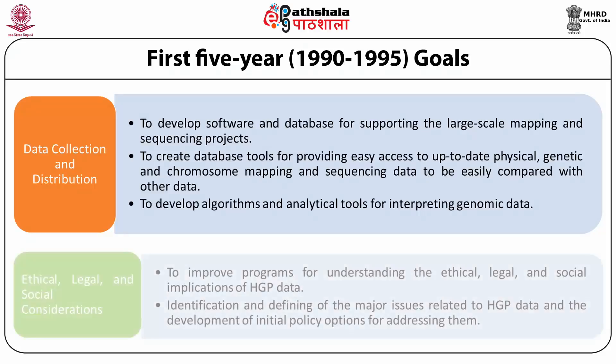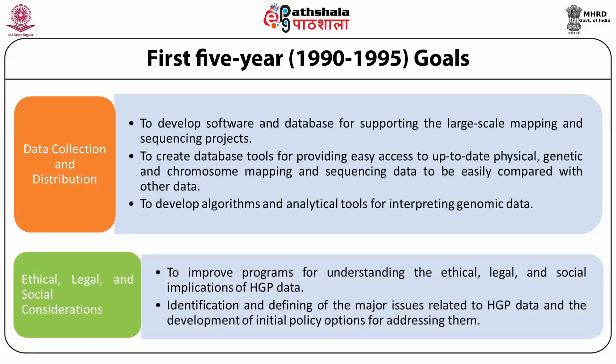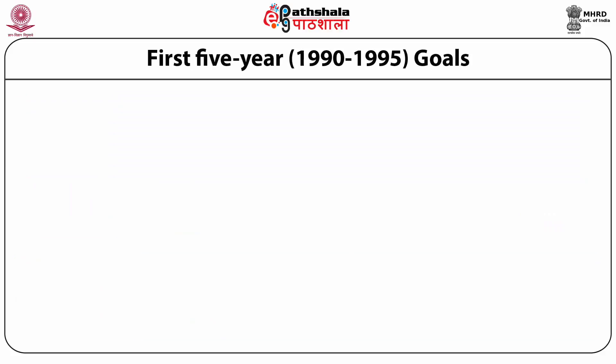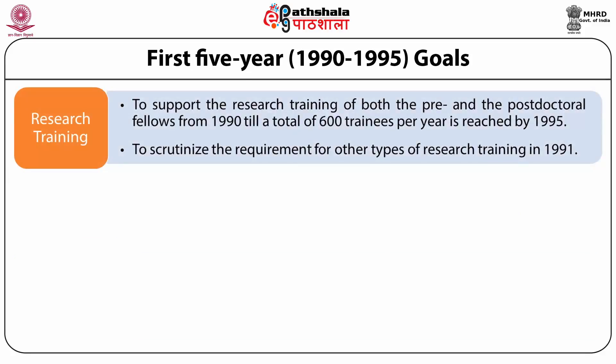The fifth goal was ethical, legal and social considerations. It involved improvement of programs for understanding the ethical, legal and social implications of the HGP data, identification and defining of major issues relating to the HGP data, and development of initial policy options for addressing them. The next goal was research training, which involved supporting pre and post-doctoral fellows from 1990 until a total of 600 trainees per year was reached by 1995.